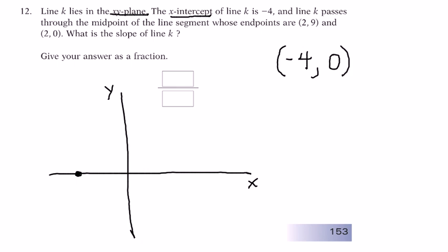And line K passes through the midpoint of the line segment, whose endpoints are 2 comma 9 and 2 comma 0. Now, I'm going to use the benefit of colored decoration here. And the point 2 comma 0 is going to be X is 2 and Y is 0. And then the point 2 comma 9. X is going to be 2 and Y is going to be 9. So, that's going to be up here somewhere.